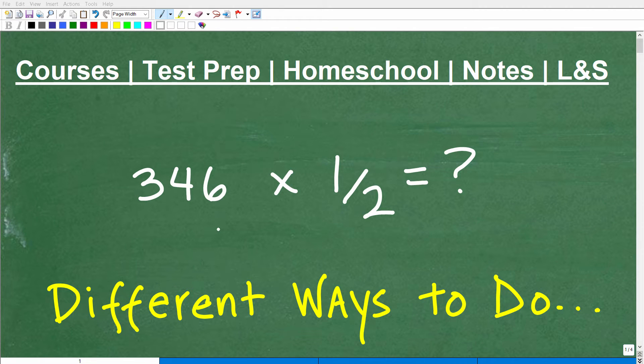Okay, let's go ahead and figure out what 346 times 1 half is equal to. And we're going to figure this out in a few different ways.